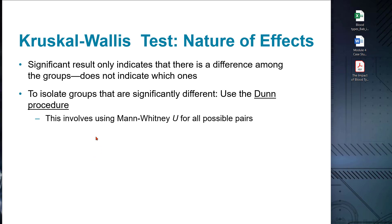When we conduct a Kruskal-Wallis test, a significant result indicates that there is a significant difference among the groups being compared. However, it does not provide specific information about which groups differ from each other. To identify the specific groups that exhibit significant differences, we can utilize a post-hoc test such as the DUN procedure. The DUN procedure helps identify which groups differ significantly by conducting multiple pairwise comparisons while adjusting for the increased chance of Type 1 errors, or false positives, that arise from conducting multiple tests.